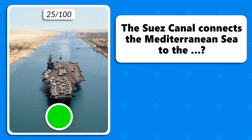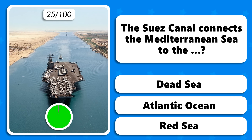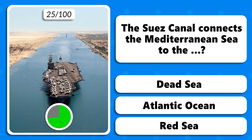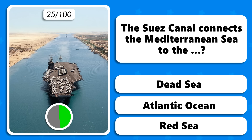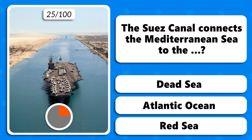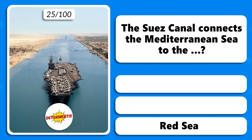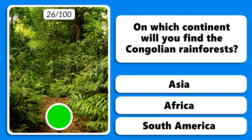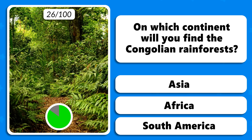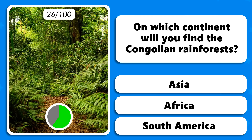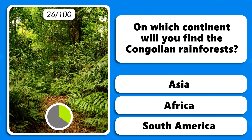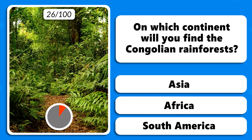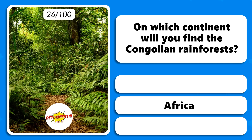The Suez Canal connects the Mediterranean Sea to the Dead Sea, Atlantic Ocean or the Red Sea? The correct answer is the Red Sea. On which continent will you find the Congolian rainforests — in Asia, Africa or South America? They are in Africa.